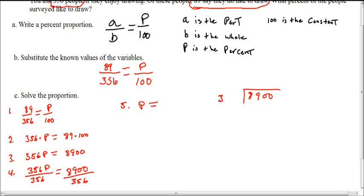And your denominator always is your divisor. Decimal here, decimal here. So 356 goes into 8900.